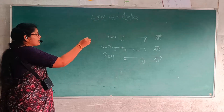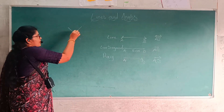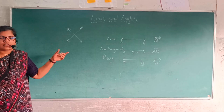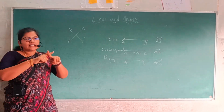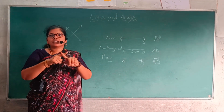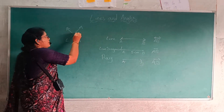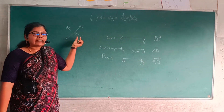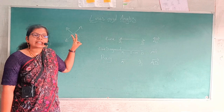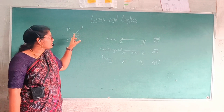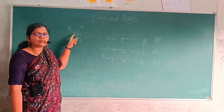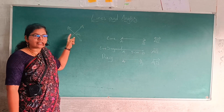Now we can learn about lines. These are intersecting lines — two lines intersecting each other. This intersecting point Q is called the point of intersection. Two lines intersect at point Q, and that point is called the point of intersection.